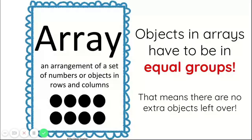We'll begin by reviewing what an array is. An array is an arrangement of a set of numbers or objects into rows and columns. The picture you see of these black circles is an array. Objects in arrays have to be in equal groups, which means when we line them up and put them in an array, there are no extra objects left over.